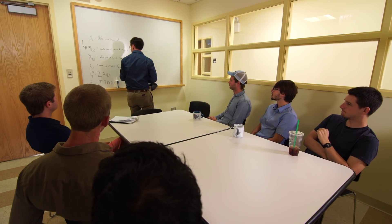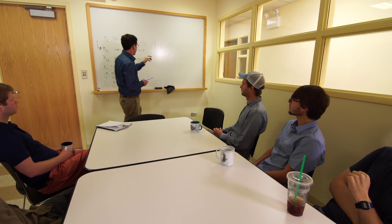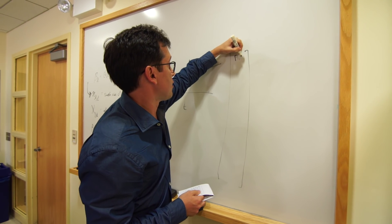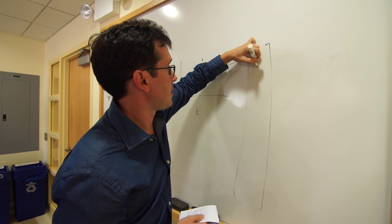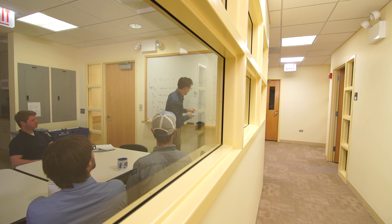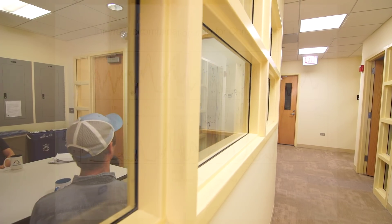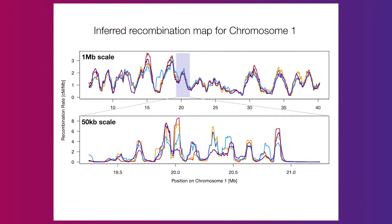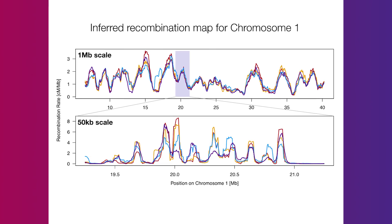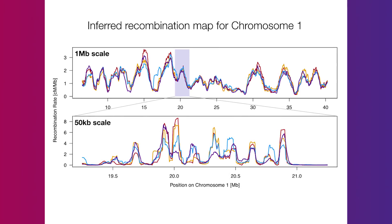Our work on recombination rates in African Americans took a new approach for estimating recombination rates, where we looked at locations where along the chromosome there's African ancestry and then a switch to European ancestry. With this new method, we were able to efficiently estimate a fine-scaled map for African American individuals where no previous map existed.